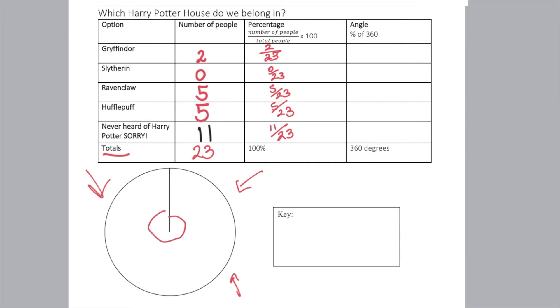How do we do that? The first thing we've got to realize is that a circle is 360 degrees. We just need to find what is two twenty-thirds of 360, because once you know that, you know how many degrees will go to Gryffindor. Remember, if you see the word 'of' change it to a times. We're going to find 2/23 times 360, then 5/23 of 360, 5/23 of 360, and 11/23 of 360. By doing this calculation, we're going to find out how many degrees of our circle go to that sector.